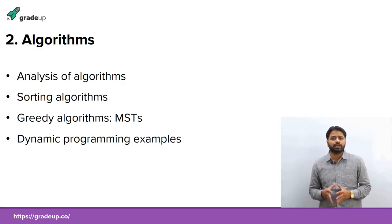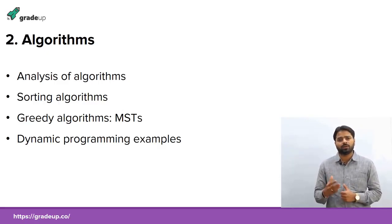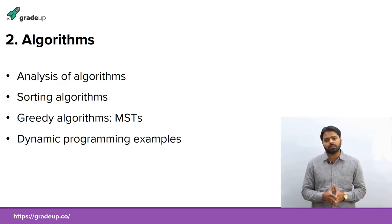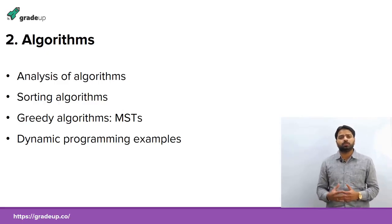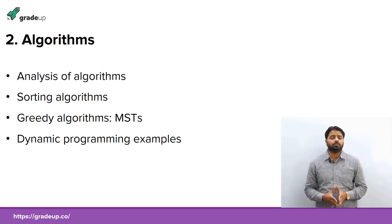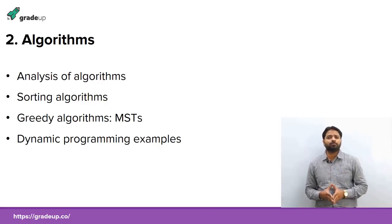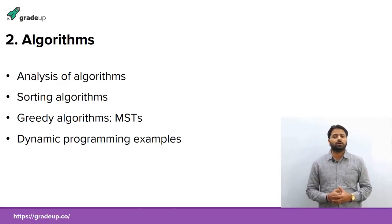Let's move to the second subject: Algorithms. Many topics overlap with data structures, like graphs and trees. The first type of question coming every year is analysis of algorithms — they may ask about existing algorithms or give a new algorithm to find its time complexity. Many times they ask about quick sort and merge sort variations, or array-based questions like finding negative numbers and determining time complexity. Analysis of algorithms is very important.